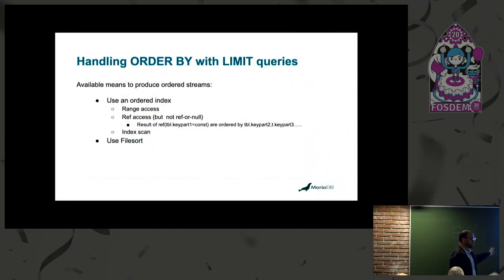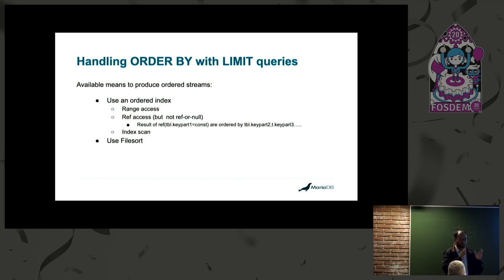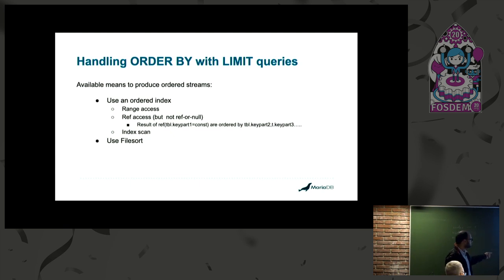Now this part would be the history, and then I'll talk about what is new in MariaDB 10.5. To handle ORDER BY LIMIT queries, there are several approaches. One is that we use an ordered index, which can be used in three ways: ref access, where some key part equals a constant and the remaining key parts order the rows; range scan; and index scan, which is just a normal scan on the index.